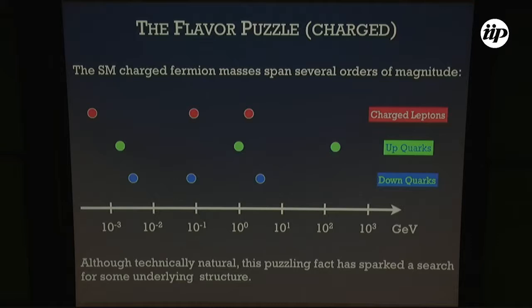Even though this pattern is technically natural — in the sense that once you put in these Yukawa couplings or masses, you would not expect large radiative corrections as you would for scalar masses — it is still a very puzzling pattern that has sparked a lot of theoretical effort to explain.